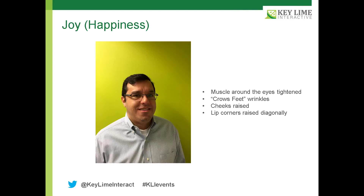Some of the physical characteristics to describe joy or happiness: the muscles around the eyes are tightened, you notice crow's feet and wrinkles, the cheeks are raised, and the lip corners are raised diagonally. In a user research context, this is obviously the goal — to get your users to show facial expressions representative of a pleasant experience. If your users are smiling, they're probably happy with what they're dealing with or they're confident about what they're discussing, which is always a good thing.